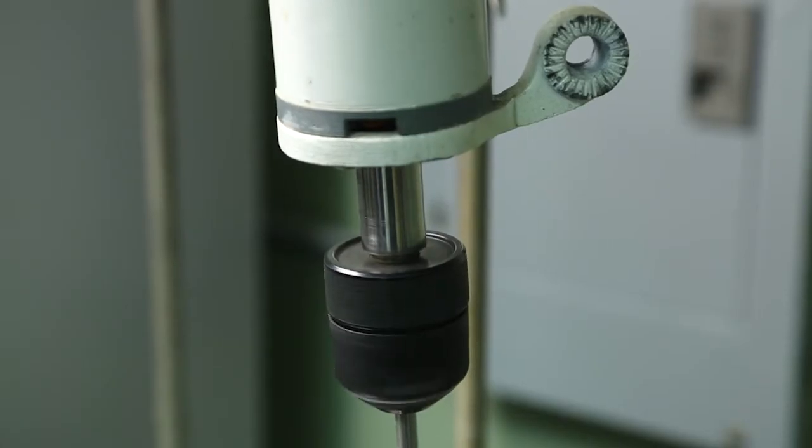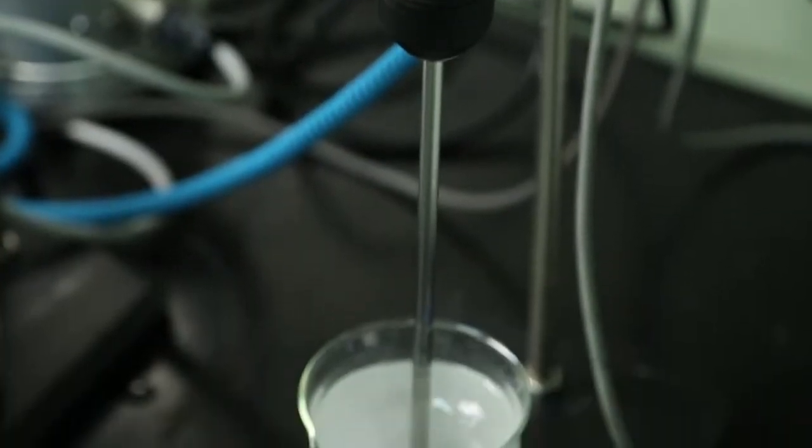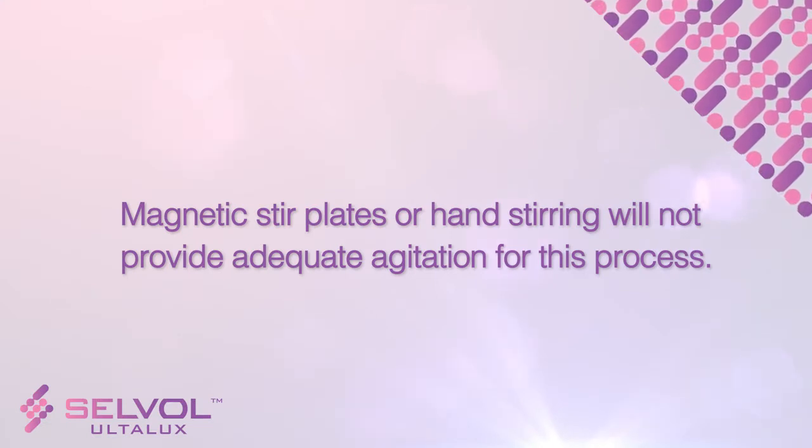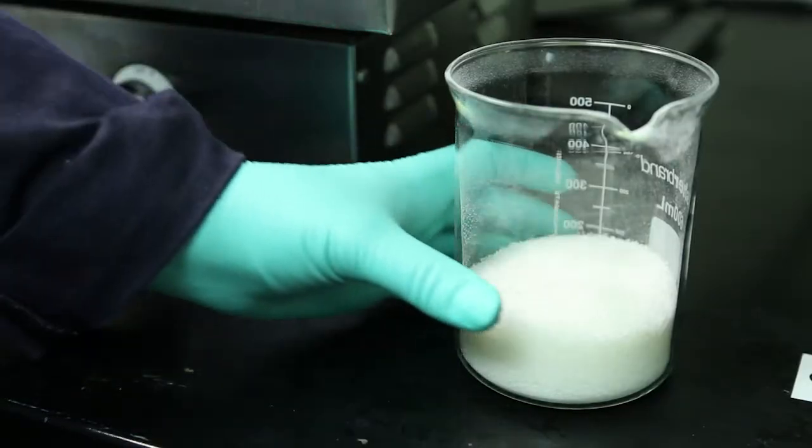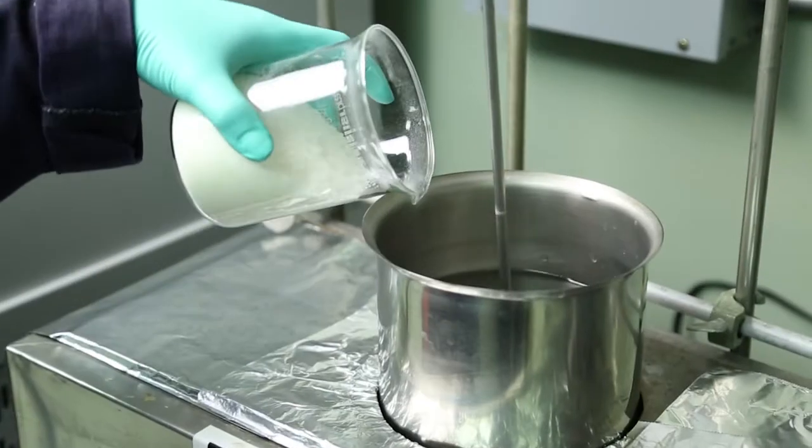Variable speed overhead mixers are the preferred agitators. Magnetic stir plates or hand stirring will not provide adequate agitation for this process. Add the Selval granules to the water slowly and steadily.